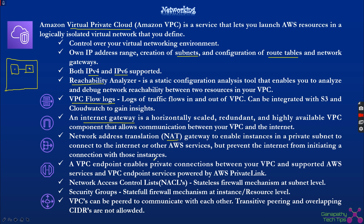Another thing to know is VPC Endpoints — private connectivity for traffic happening between AWS services and resources within AWS. For example, if I have an EC2 instance in a subnet and need to access an S3 bucket, instead of going through the internet and coming back to S3, we can use AWS PrivateLink — enabled using AWS VPC Endpoints.